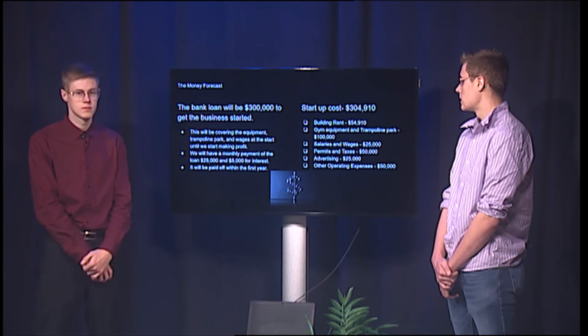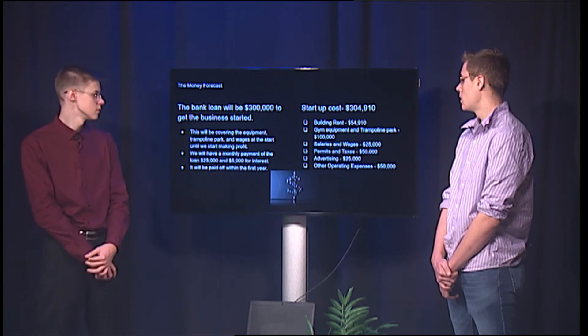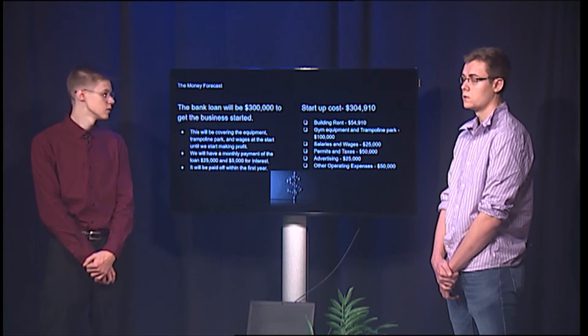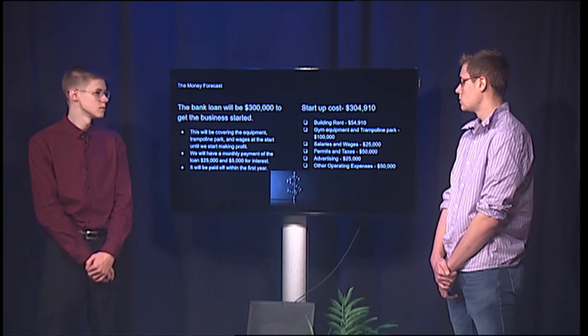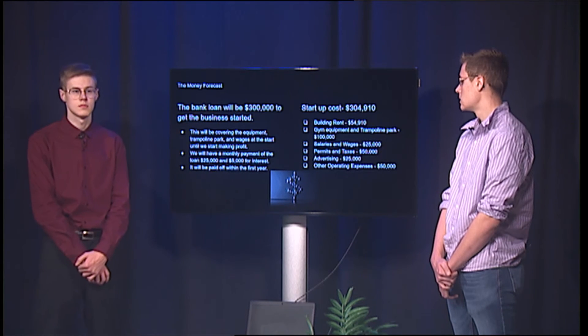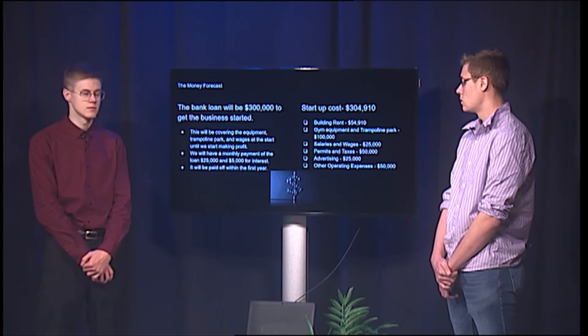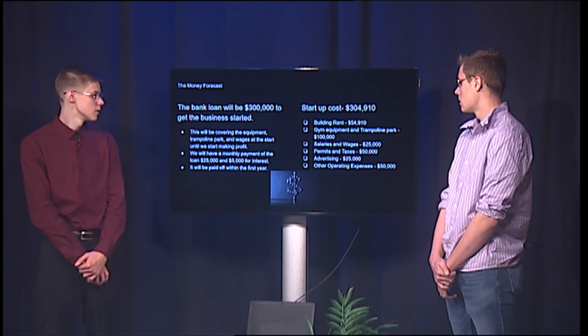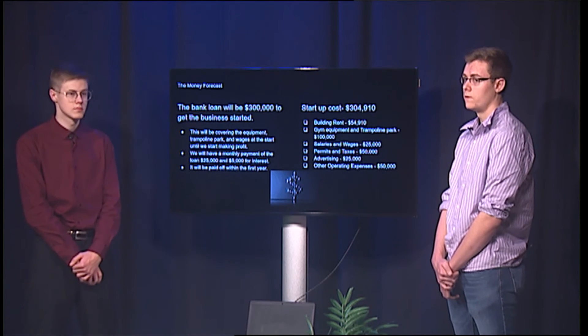The building rent will be $54,910. Gym equipment and trampoline park will cost $100,000. Salary and wages will be $25,000. Permits and taxes will be $50,000. Advertising will be $25,000. And other operating expenses will be $50,000.